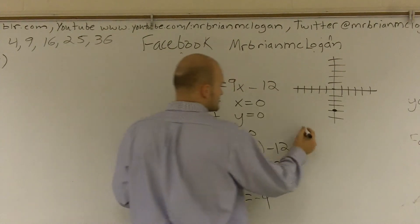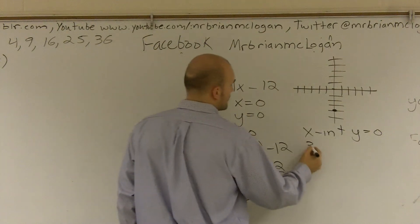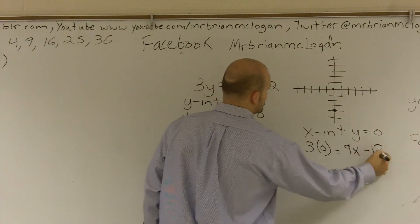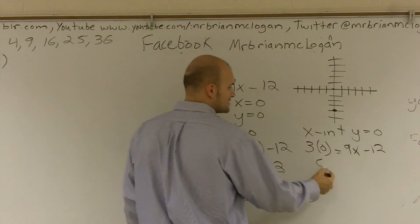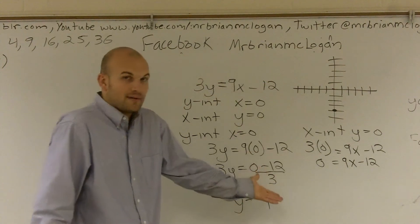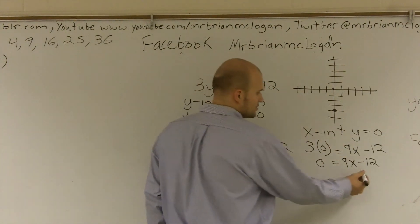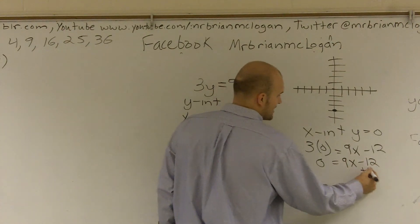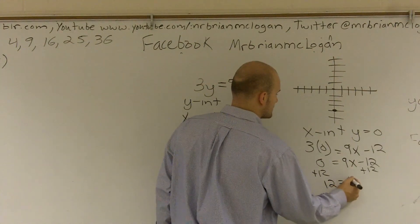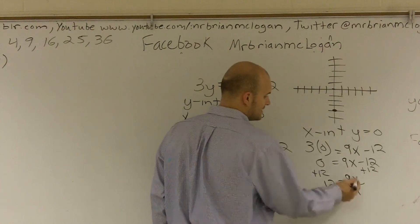Next point, x intercept. y equals zero. Three times zero equals nine x minus twelve. Three times zero obviously is zero minus twelve. Now I need to solve for my x, right? I need to get everything off the side of the x. So to do that, I need to say what is happening to my variable. I need to add the twelve. Twelve equals nine x. Divide by nine.